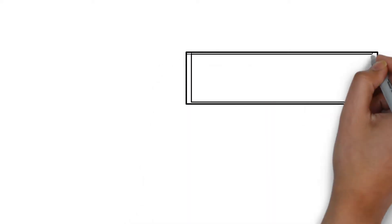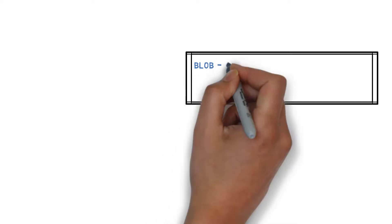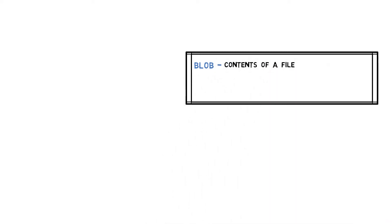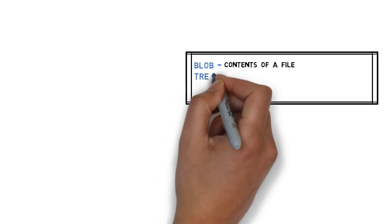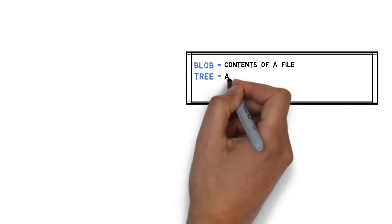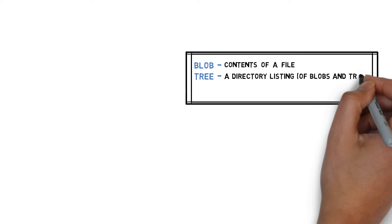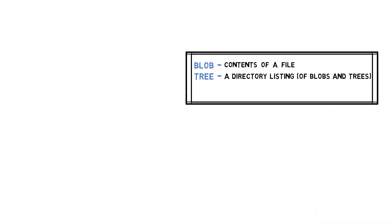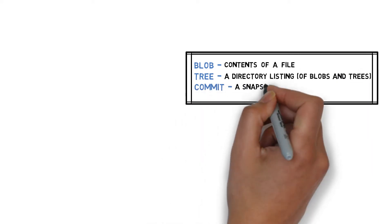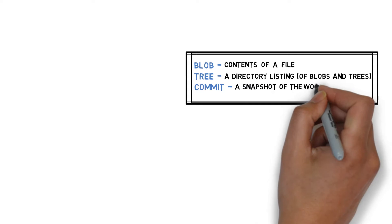In the previous video, we introduced three Git objects. A blob, binary large object, that stores contents of a file. A tree, a directory listing of blobs and other trees. And we introduced a commit, a snapshot of the working tree at a certain point in time.